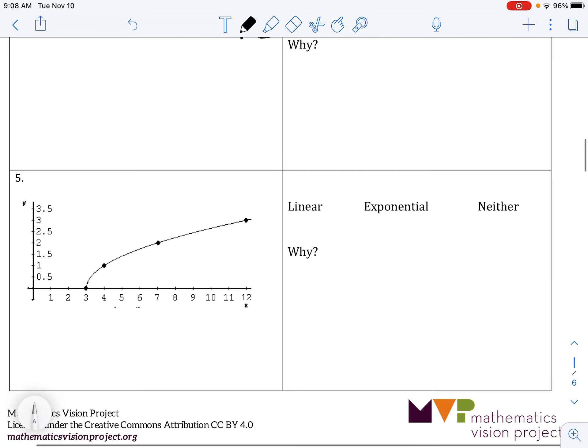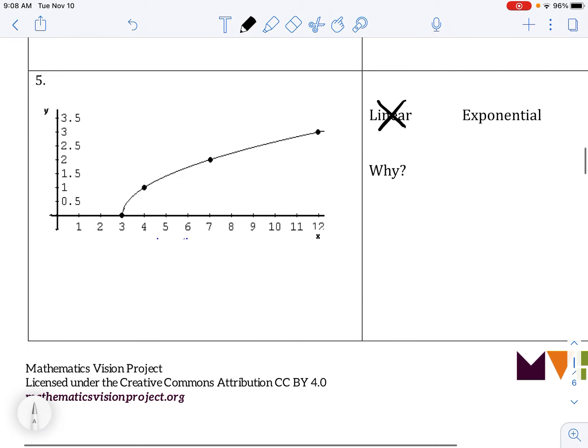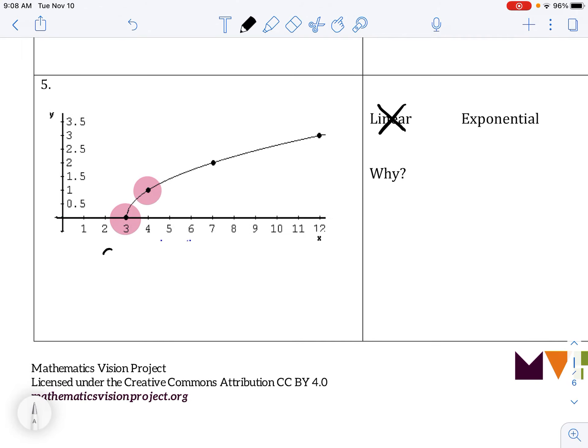On 5, we can tell it's not linear because that's not a straight line. We could check a few points to check for exponential. So if I did right here, this would be 0 over looks about 1, and then 1 over looks like 2. So it does not have a common ratio.